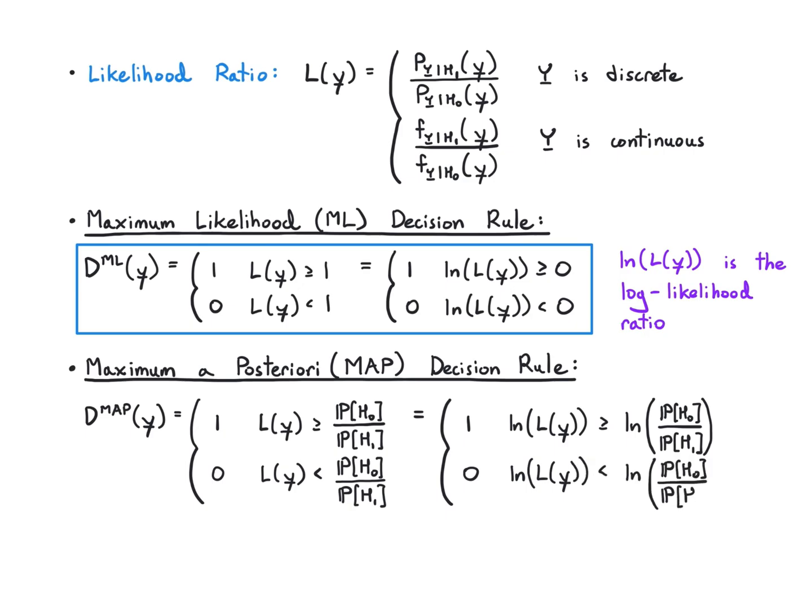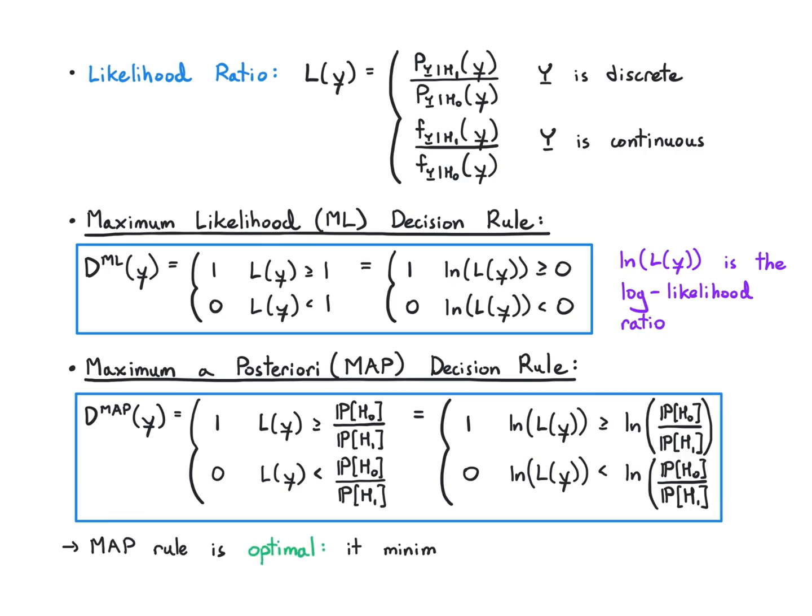As before, the MAP rule is going to be the best thing you can do. It minimizes the probability of error. It requires knowledge of the hypothesis probabilities as you can see by that threshold. The MAP rule is equivalent to the ML rule only when the hypotheses are equally likely, so they both have probability one half. When that's true, ML and MAP are the same thing because one half divided by one half is one, so the thresholds here are the same.